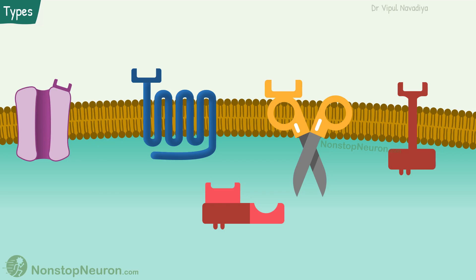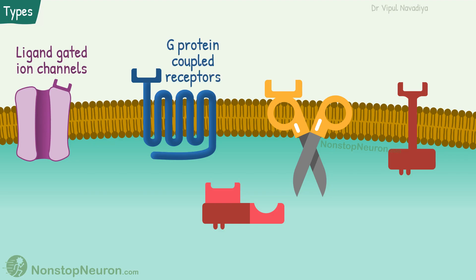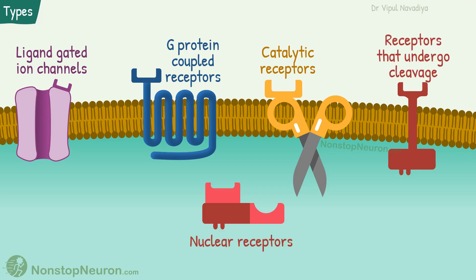Broadly, receptors can be divided into: ligand-gated ion channels, G-protein coupled receptors, catalytic receptors, nuclear receptors, and receptors that undergo cleavage. Let's see each type one by one.